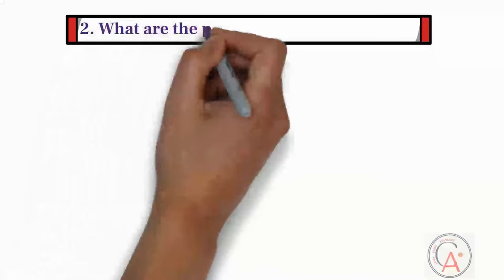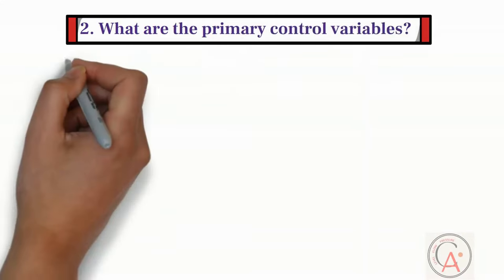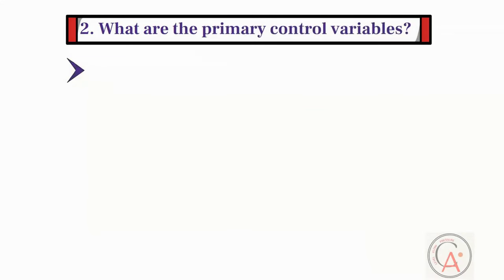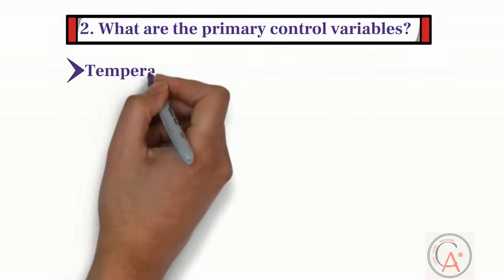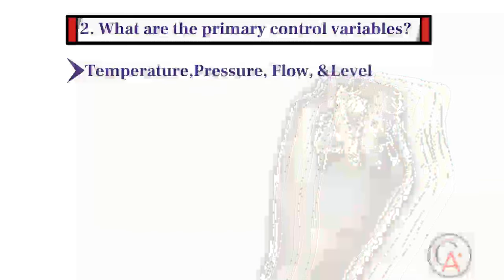The second question is: what are the primary control variables? The primary control variables are temperature, pressure, flow, and level.